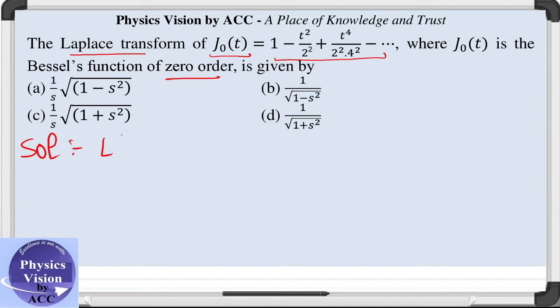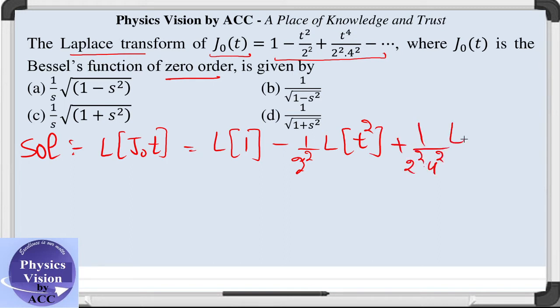What will we do? We will make use of one linear property that this Laplace transform can be written separately to each and every term. So this is Laplace of 1 plus Laplace of t² divided by 2² plus Laplace of t⁴ divided by 2²·4² and so on.